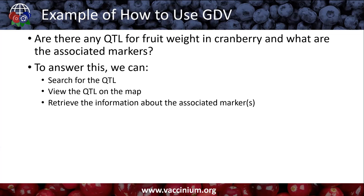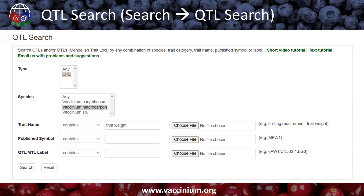Let's do an example of how you would use GDV. The question we're going to answer today is: we want to know if there are any QTL for fruit weight in Cranberry, and what the associated marker or markers are. In order to answer this, we're going to search for the QTL on GDV, view the QTL on the map, and retrieve the information about the associated markers.